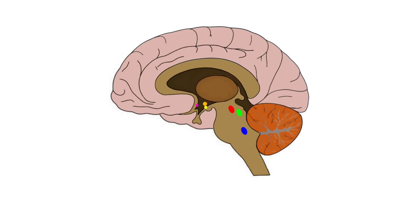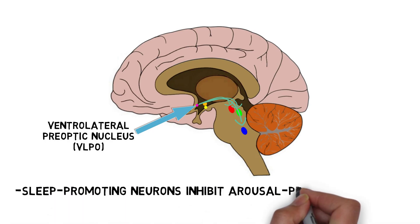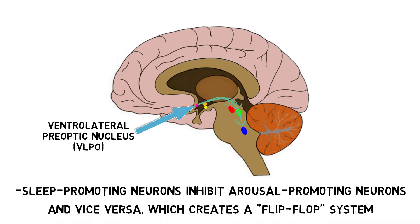For example, neurons in a nucleus of the hypothalamus called the ventrolateral preoptic nucleus, or VLPO, project to most parts of the ascending arousal system and release the inhibitory neurotransmitters GABA and galanin onto these wake-promoting regions. Neurons in regions like the VLPO are also inhibited by neurons in the arousal system, which creates an arrangement sometimes referred to as a flip-flop switch, where each system turns the other off when it is active. This allows for rapid transitions between sleep and waking states.